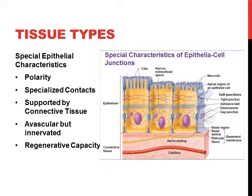Epithelial tissue also has specialized contacts — the different types of cell junctions: gap junctions, desmosomes, and tight junctions. When we have an epithelial sheet lining the stomach, tight junctions are really important because they prevent the acidic contents of the stomach from leaching down into the basement membrane.